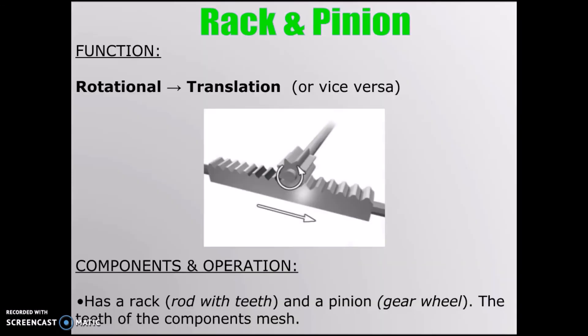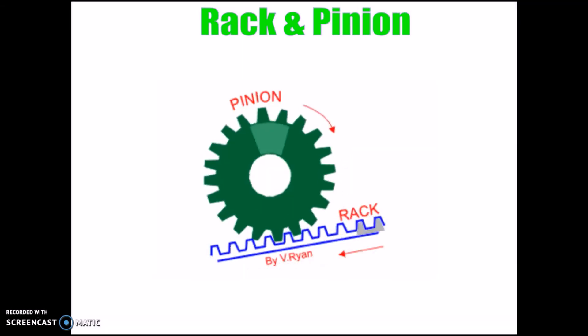Now in a rack and pinion system, it has a rack, which is a rod with teeth, and a pinion, which is a gear wheel. The teeth of the components must mesh together, or it will not function as a system.